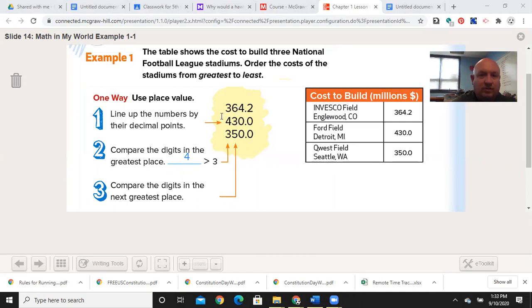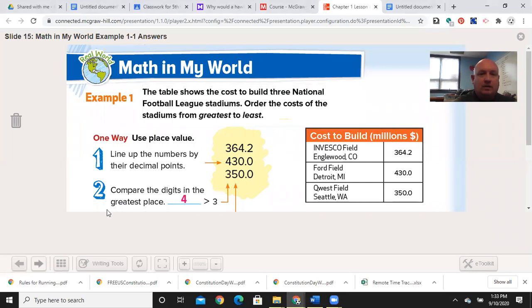Then we go to the next place, which would be 5. 6 is less than 6, so this one, 364, is next. 6 is greater than 5. We now know that Ford Field was the most expensive of them, followed by Invesco Field the home of the Denver Broncos, and then Quest Field in Seattle the home of the Seahawks. I now have greatest to least.